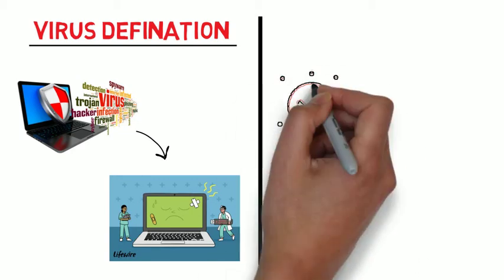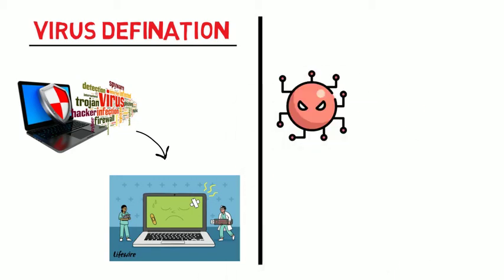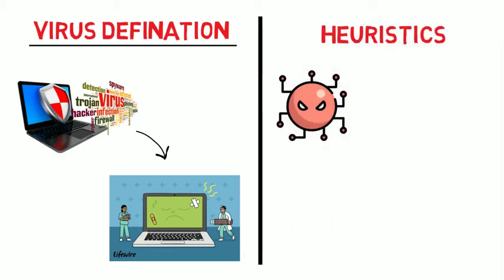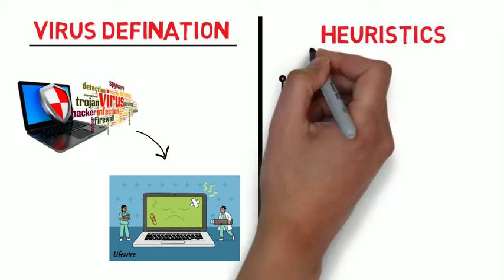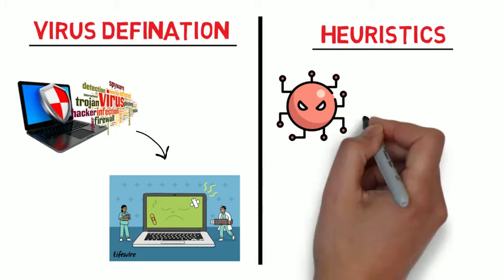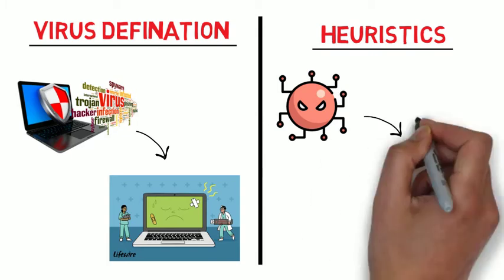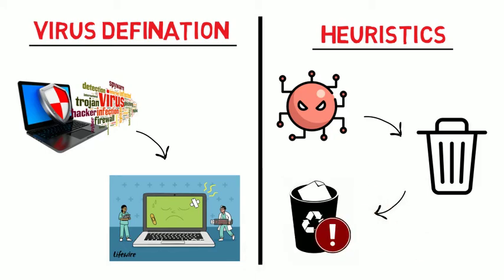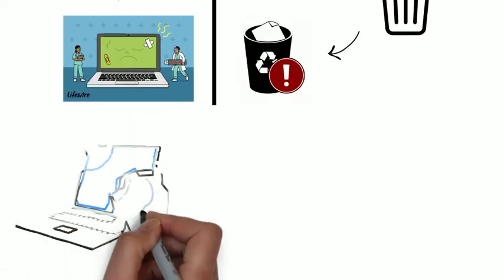Additionally, some viruses are written in a way that allows them to modify themselves, so virus definitions may not work in those cases. That's why antivirus has another method called heuristics. Heuristics detects and deletes any suspicious changes it can see. However, setting the aggressiveness of heuristics is very tough to handle, as it can sometimes flag and delete normal working files as well.